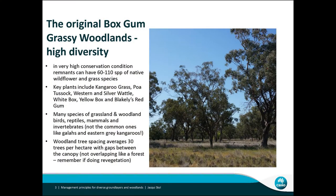Many species of grassland and woodland birds, reptiles and mammals are associated with that — not just your common eastern grey kangaroo and cockatoo and corellas, but a lot of very specific special species. In the woodlands, the tree spacings show big open canopies and often distance spacings between trees, averaging about 30 trees per hectare. Remember that when you do revegetation — you don't need to plant huge amounts of trees.